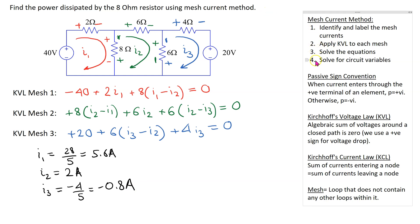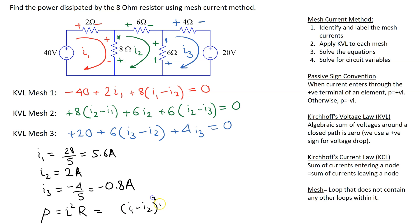Once we solve the equations, we can find any desired circuit variable. In this case, we need to find the power dissipated in the 8 ohm resistor, given by P = I²R. Two currents flow through the 8 ohm resistor, but because we are squaring, direction does not matter. Substituting: P = (I1 minus I2)² × R = (5.6 minus 2)² × 8 = 103.68 watts. The answer is positive because resistors always dissipate power.